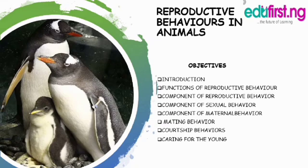Hello everyone, welcome once again. This is a biology class on the topic of reproductive behaviors in animals. In this topic, we'll be considering the following objectives: the introduction, the function of reproductive behavior, the components of reproductive behavior, the component of sexual behavior, component of maternal behavior, mating behavior, courtship behavior, and finally caring for the young.